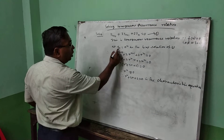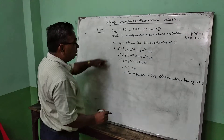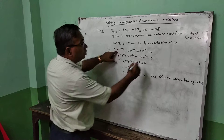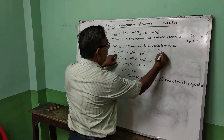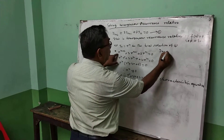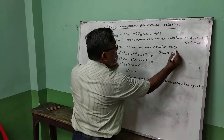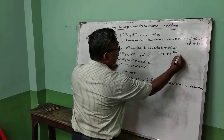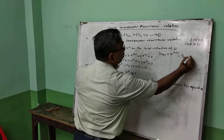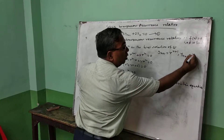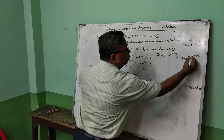I am putting y(n) = r^n. So what is y(n+1)? y(n+1) = r^(n+1). And y(n+2) = r^(n+2).